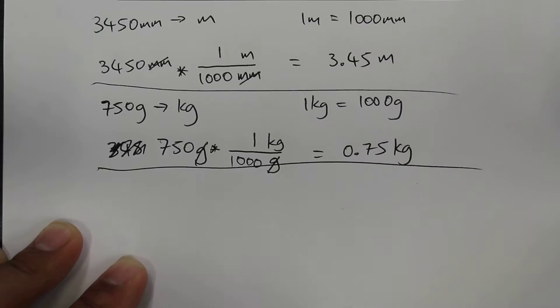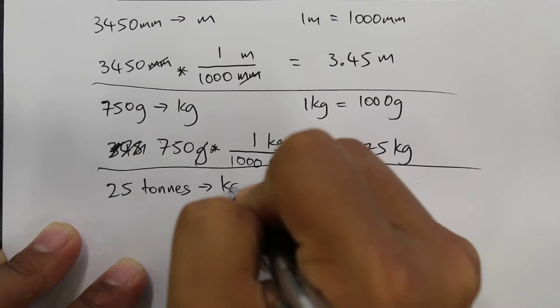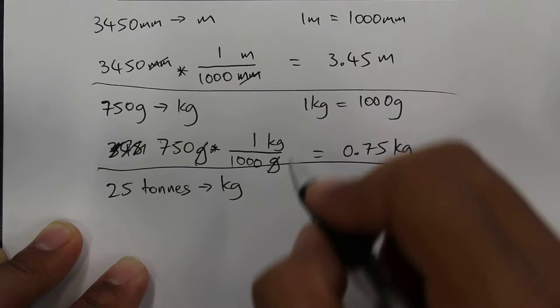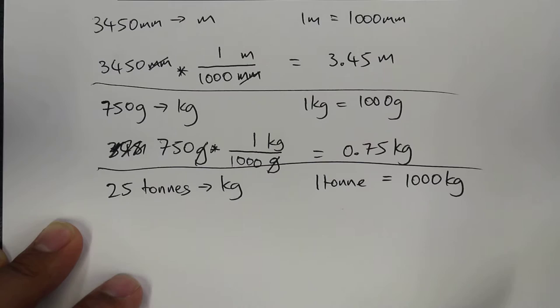Third one. So the third question is express 25 tons in kg. So for this, we need to know how many kgs there is in a ton. So in 1 ton, there is 1000 kilograms. So we're assuming that this is the metric ton.